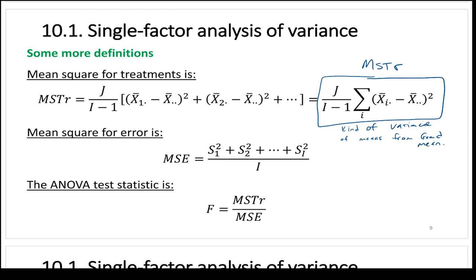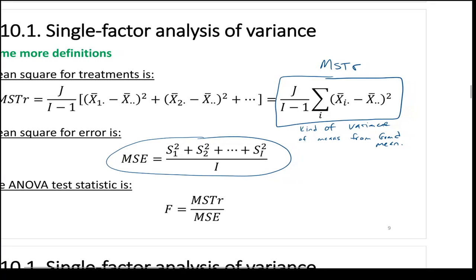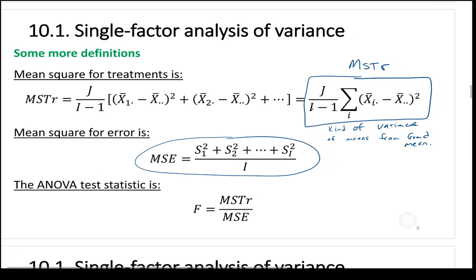MSE, the mean square for error, is basically just an average of the variances of your populations — the average variance. The test statistic is then MSTR divided by MSE: the variance of the means from the grand mean versus the average variance overall.